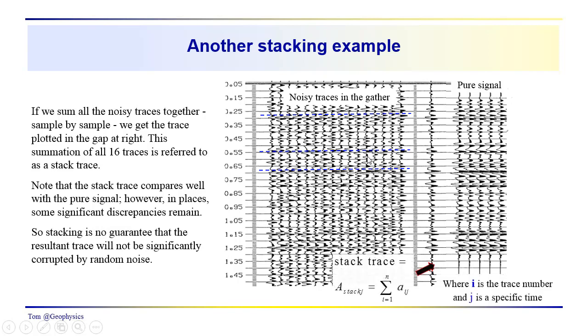If we take a look at the stack trace, this trace appears in this gap. We see the events that have summed through, just taking the sum of all 16 traces at each sample time, going left to right across the gather. We have a sum trace here, summing laterally across the trace for a particular time, and this would be the pure signal.